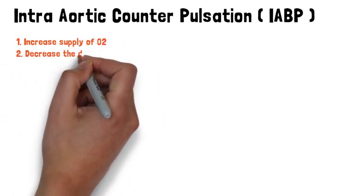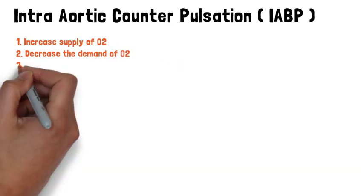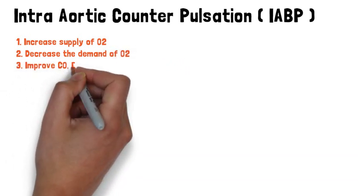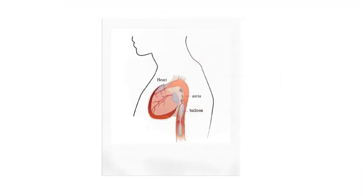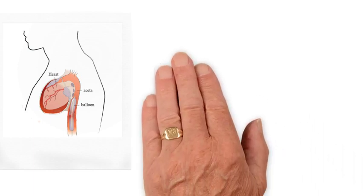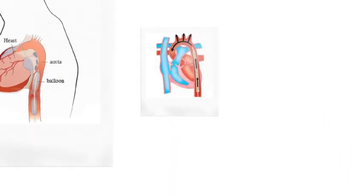We also want to improve cardiac output, ejection fraction, and increase coronary perfusion pressure, which is CPP. Systemic perfusion and a decrease of heart rate, pulmonary capillary wedge pressure, and SVR is something else that the balloon pump also does.